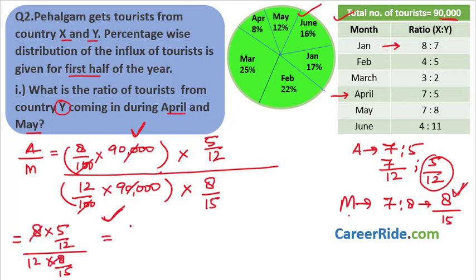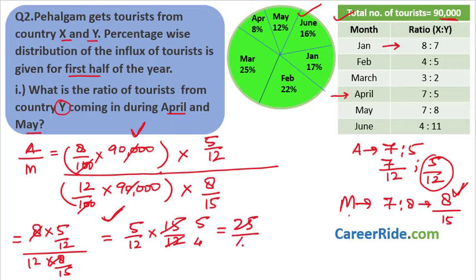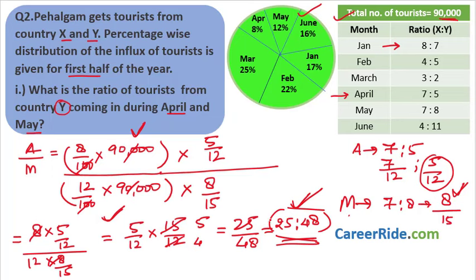Simplifying: after cancellations we have 5/12 × 15/12. Further simplifying: 3×5 = 15, 3×4 = 12, giving 5×5/(12×4) = 25/48. So the ratio of tourists from country Y during April and May is 25:48. If you find anything confusing, pause the video and make sure you've understood clearly.